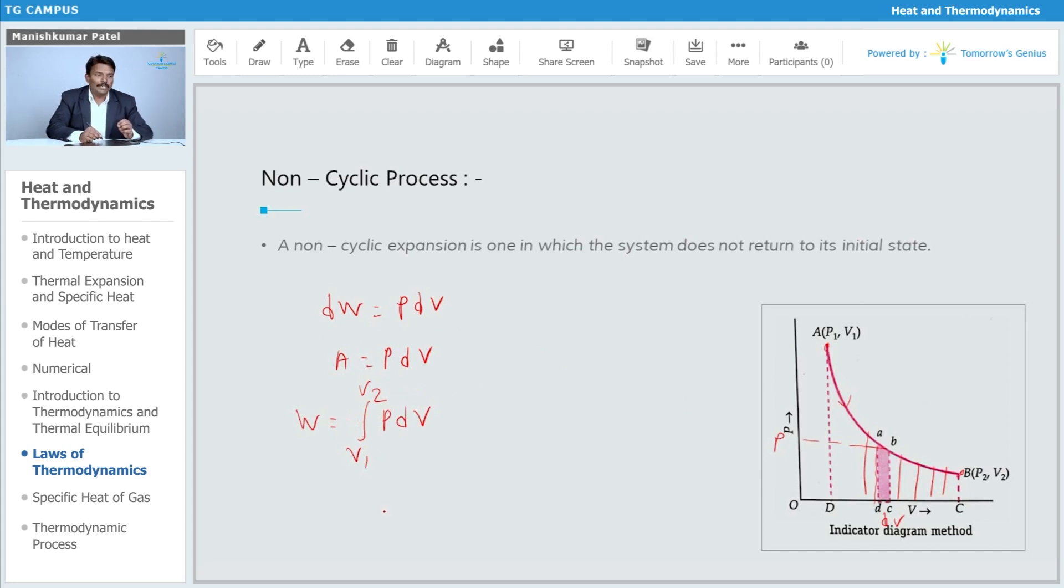Also from this indicator method, by considering first a single strip, finding its area, then doing the integration for all the strips, which will give the area. That is nothing but the total work done. The total work done is simply the area under this curve, which you can find easily for this particular case.